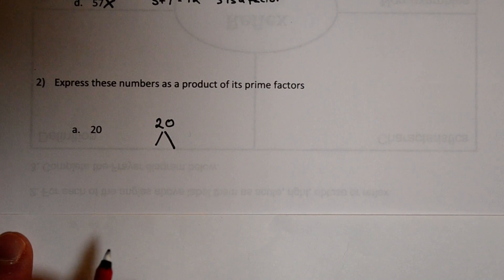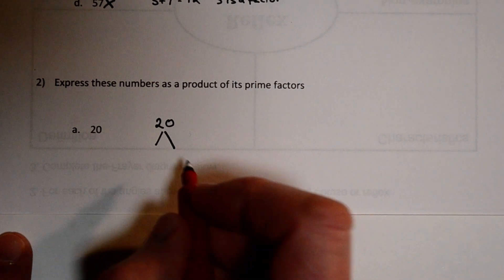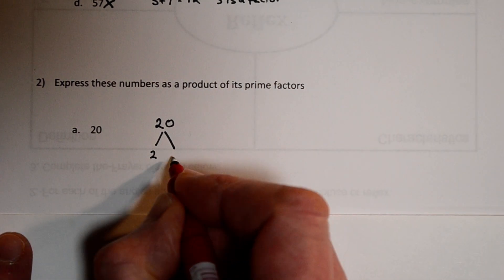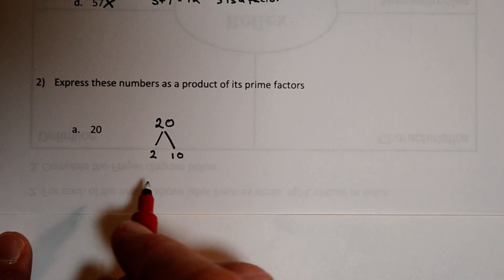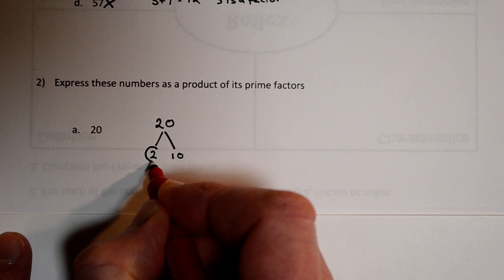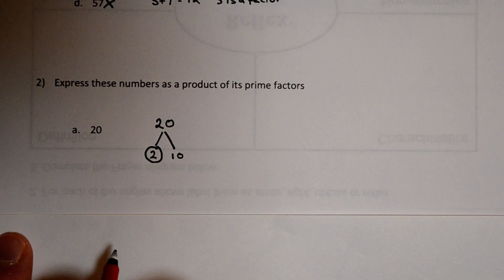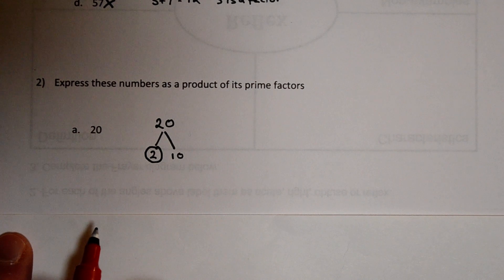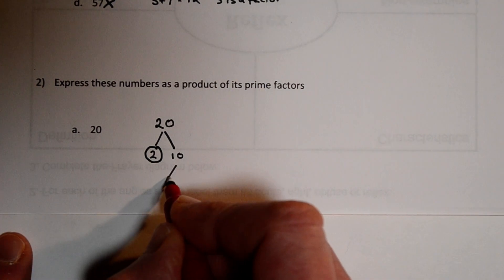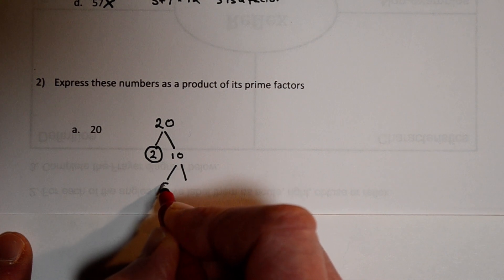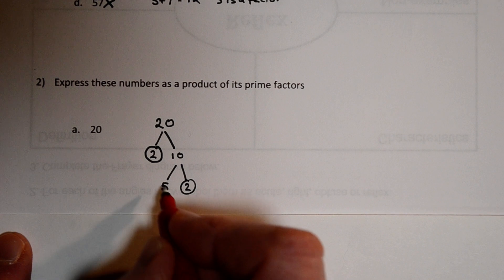A nice easy one to start off with is we know 2 is a factor and so it's 2 times 10. 2 is a prime number so I'm going to circle that and the tree stops or that branch stops at the 2. But 10 is not a prime. So what can we divide that into? It's 5 times 2.